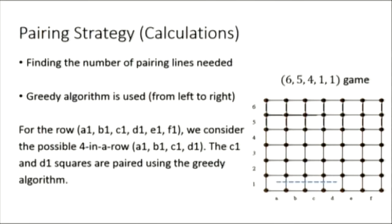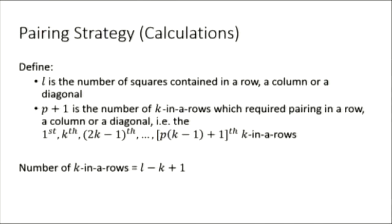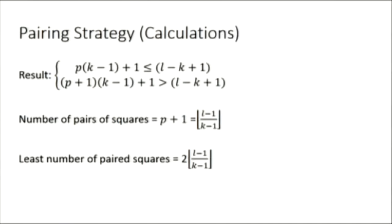And now the calculations. We want to find the minimum number of paired squares needed to cover all k in the rows. So greedy algorithm is used. When we consider a row, a column, or a diagonal, we consider all the k in the rows, and we select the rightmost pair. For example, for the row a1 to f1, we consider a1 to d1 first. We can see that there's no paired squares here, so we pair up c1 and d1 and move on. Using the greedy algorithm, we can see that the number of k in the rows is l minus k plus 1. And here we obtain that for one line of length l, the least number of paired squares is as shown.